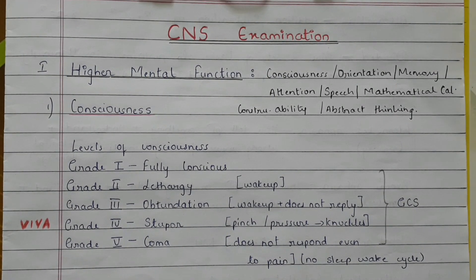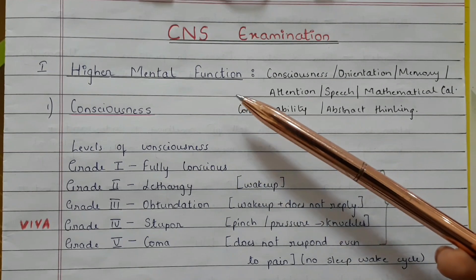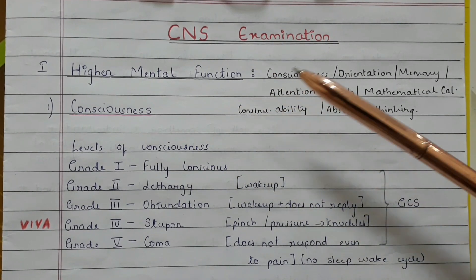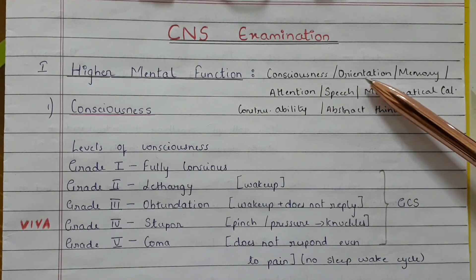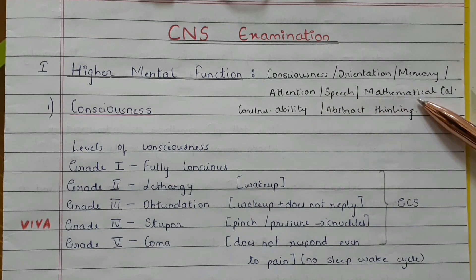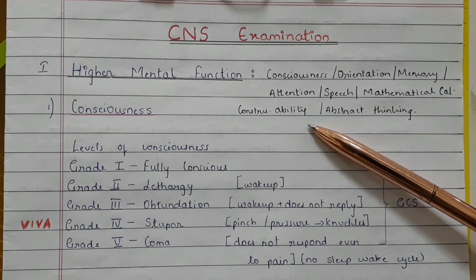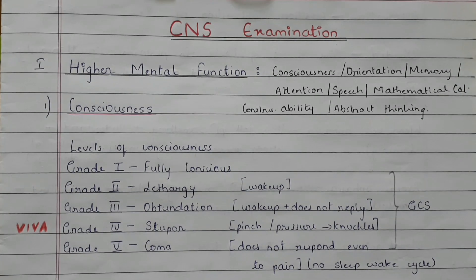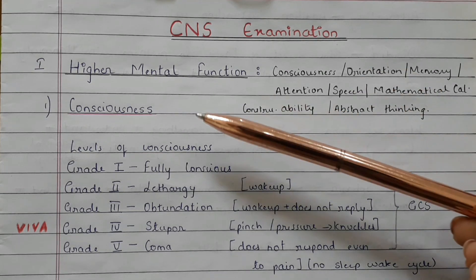CNS examination — let's see which are the higher mental functions. Higher mental functions include consciousness, orientation, memory, attention, speech, mathematical calculation, constructive ability, and abstract thinking. Now let's see each one of these in detail.